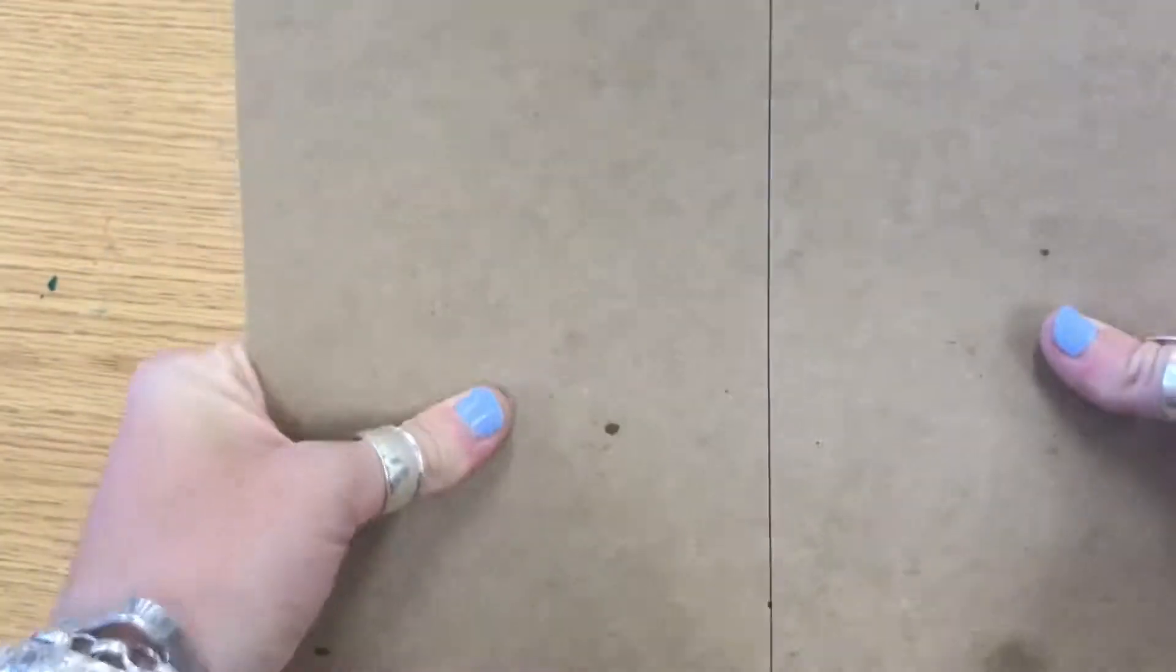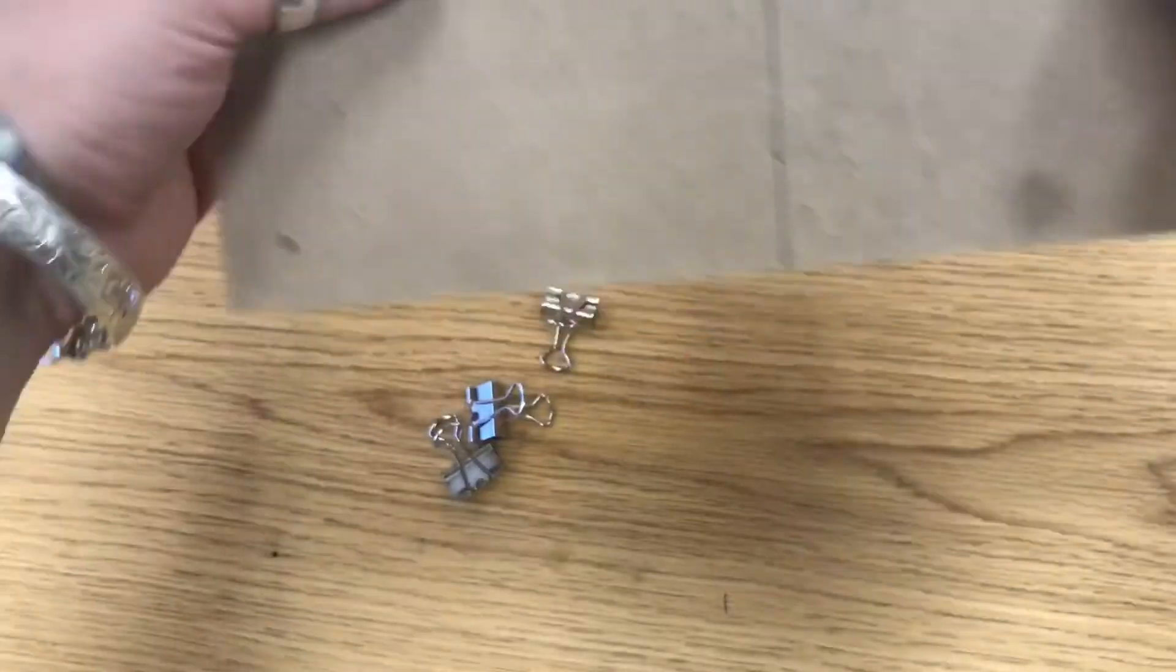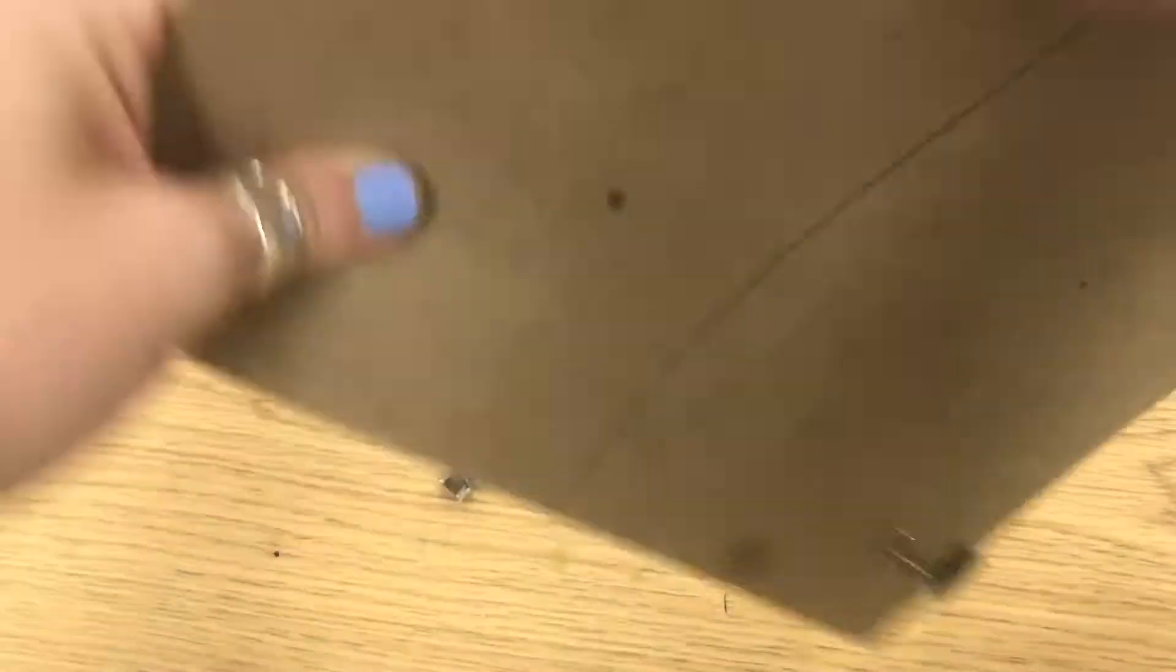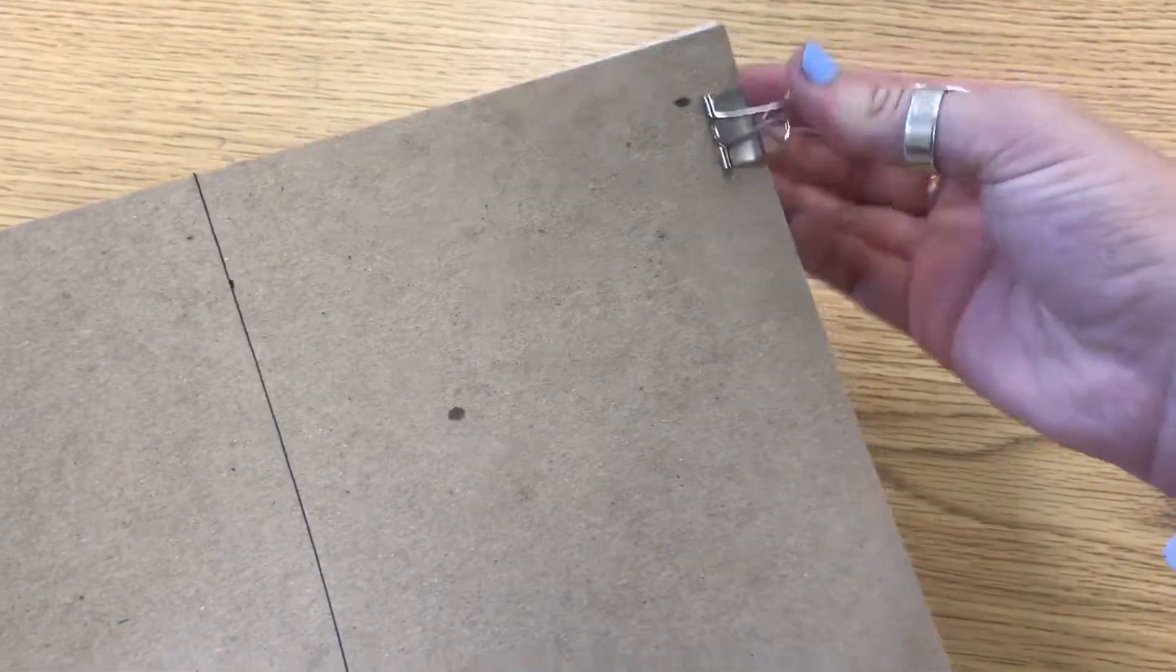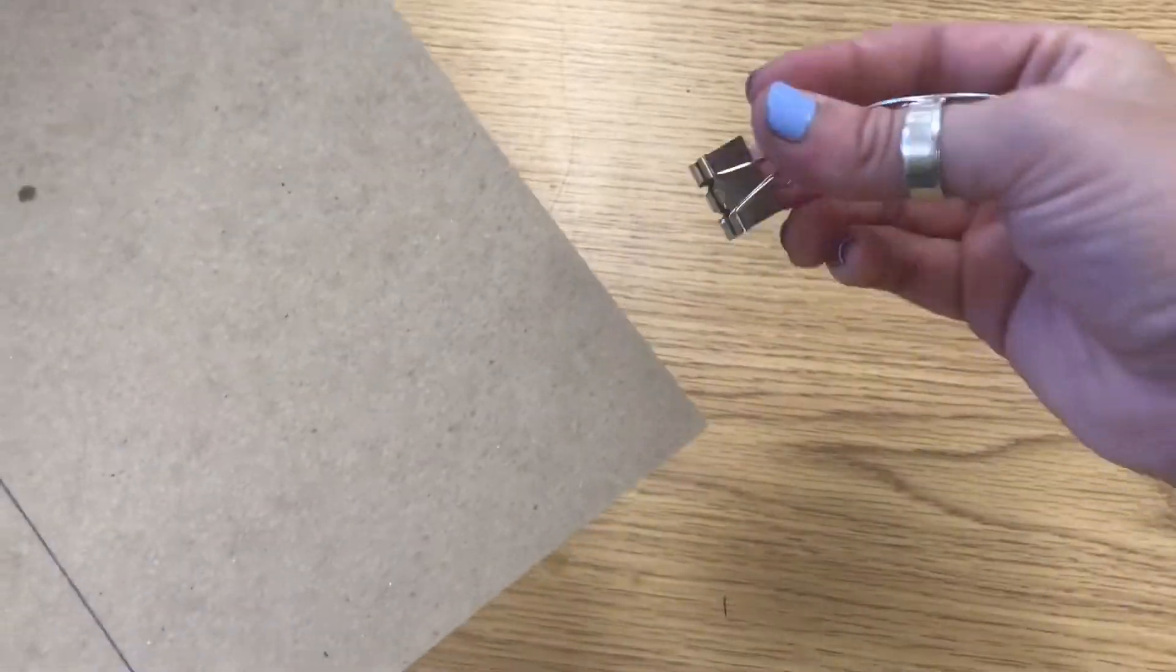All right, so next we're going to add the clips to the side of our sketchbook. Make sure your papers are lined up completely straight and you're going to add four clips to the top and the bottom of each side of your sketchbook. Make sure it's clipped onto the cardboard and all the way to the back.